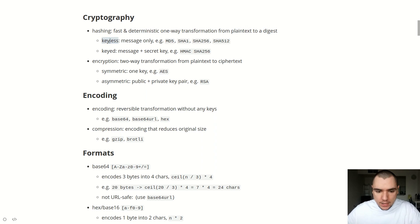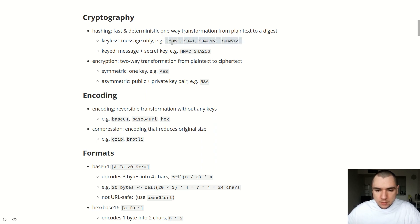As far as hash functions, there are two main kinds. There's one that is keyless — in this case, you only supply a message to the function, you don't supply any secret keys. Some of the ones you might have heard of are MD5, SHA-1, SHA-256, and SHA-512. These are very popular for things like checksums — you might have seen this if you're using NPM packages, for example.